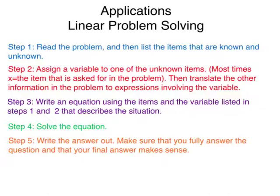The last step, step 5, is to write the answer out. Make sure that you fully answer the question and that your final answer makes sense. Sometimes you'll want to make sure that if you're finding a length, that you don't have a negative number, or that your length doesn't exceed what the boundaries are. Or, another example would be if you have to take the square root of both sides, that you don't have a negative in your square root. Just make sure that your answer makes full sense.